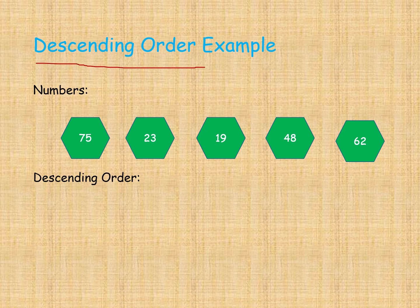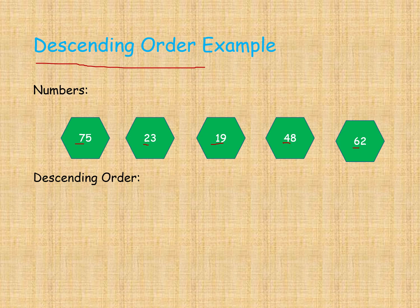Now here is an example of descending order. We are taking some random numbers like 75, 23, 19, 48, and 62. In descending order we go largest to smallest. We compare tens places: 7, 2, 1, 4, 6. The greatest tens digit is 7, so 75 is the greatest number and comes first.